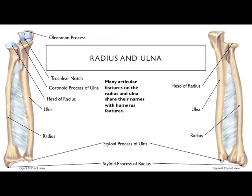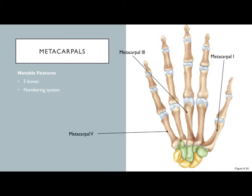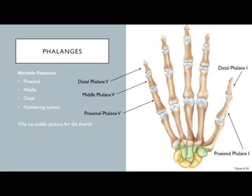The interosseous membrane is connective tissue that helps hold the radius and ulna together. Your wrist bones are called carpals — there are eight of them; you're not responsible for individual names, just know there are eight carpals. Metacarpals are the bones that make up the hand, numbered one through five starting with the thumb.